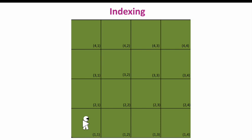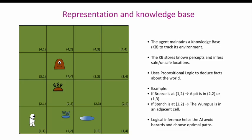Indexing in the 4x4 Wumpus World: each grid cell is indexed as X,Y, where 1,1 starts at the bottom left and 4,4 is the top right. The agent maintains a knowledge base, KB, to track its environment. The KB stores known percepts and infers safe and unsafe locations, using propositional logic to deduce facts about the world. For example, if Breeze is at 1,2, a pit is in 2,2 or 1,3; if Stench is at 2,2, the Wumpus is in an adjacent cell.